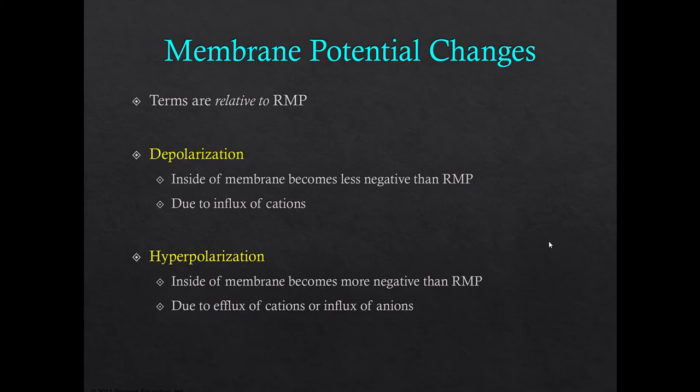In depolarization, the inside of the membrane becomes less negative than the resting membrane potential and could actually become positive. Usually this is due to the inflow of some positively charged ion like sodium. Hyperpolarization means that the inside of the membrane becomes more negative than the resting value. Usually this means we've either lost positive charge — cations effluxing out of the membrane — or perhaps we have an influx of some negatively charged anion. Typically though, it's the outward flow of some positively charged cation.